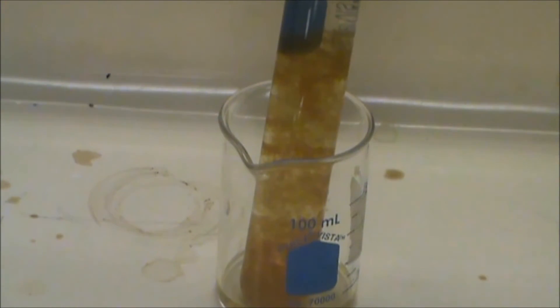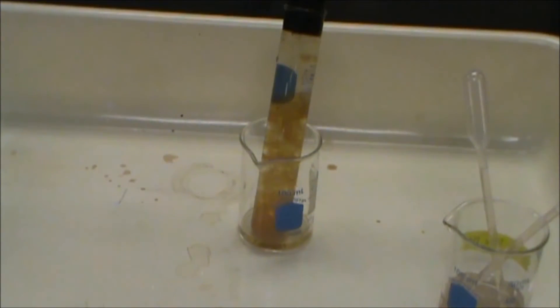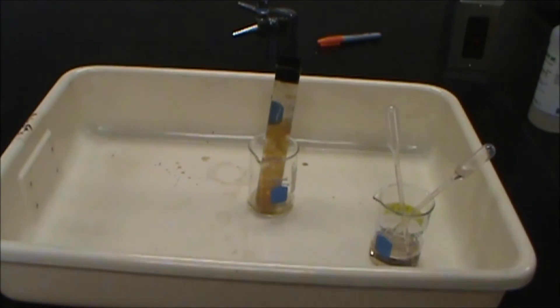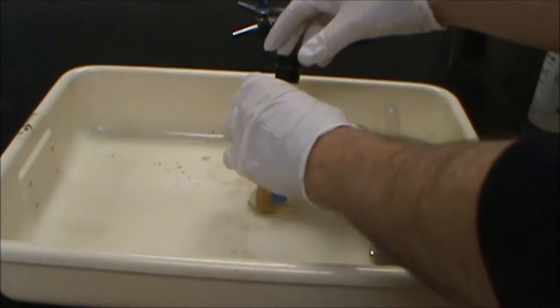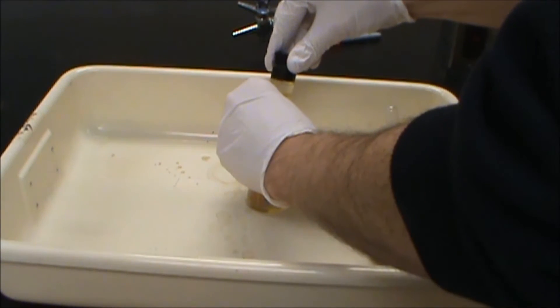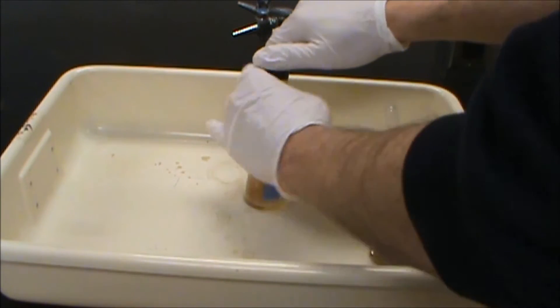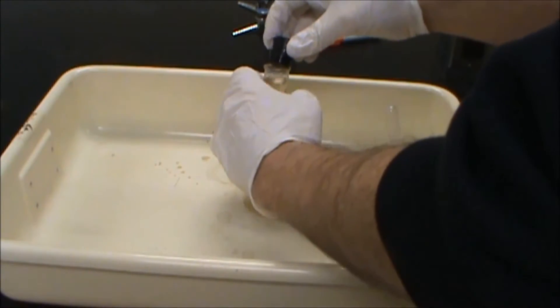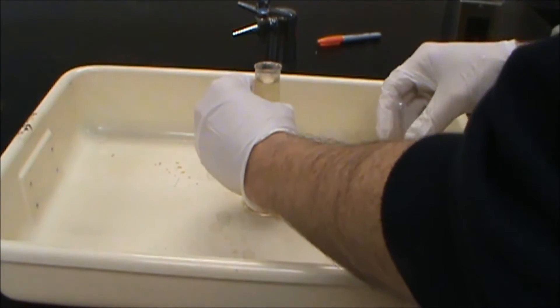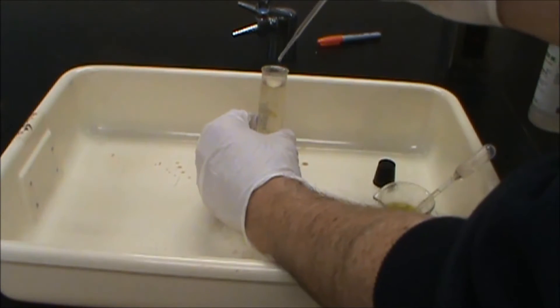So now we've let some of our precipitate settle out, and we can see it kind of making its way down towards the bottom. So now we're going to go ahead and dissolve that in sulfuric acid. When we add the acid, that is going to produce another reaction and produce a triiodide ion, so we're going to add concentrated sulfuric acid.